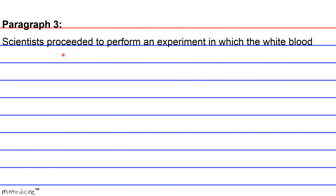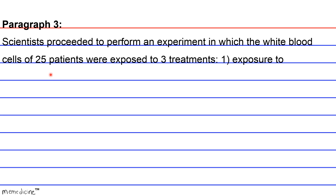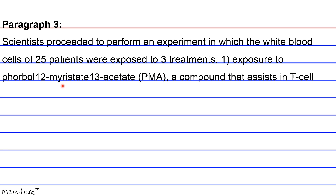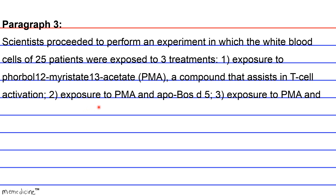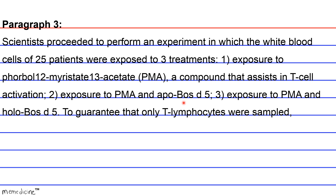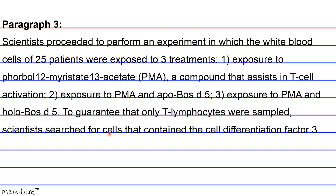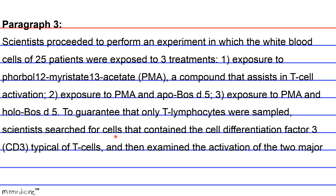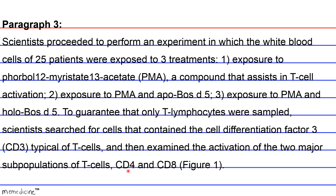Paragraph 3. Scientists proceeded to perform an experiment in which the white blood cells of 25 patients were exposed to three treatments: one, exposure to 4-BOL-12 myrostate-13 acetate (PMA for short), a compound that assists in T cell activation; two, exposure to PMA and apo BOS D5; or three, exposure to PMA and holo BOS D5. To guarantee that only T lymphocytes were sampled, scientists searched for cells that contain the cell differentiation factor 3 (CD3), typical of T cells, and then examined the activation of the two major cell populations of T cells, CD4 and CD8.